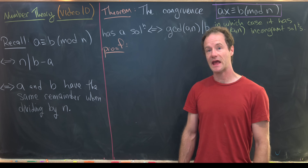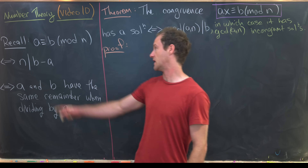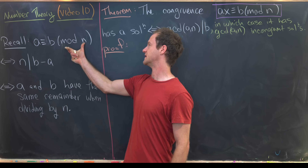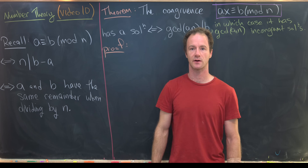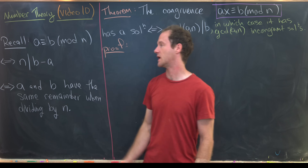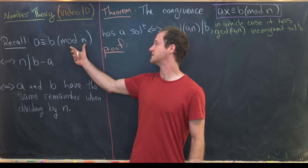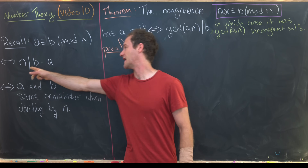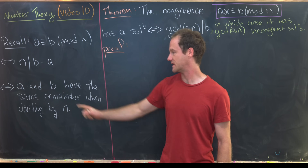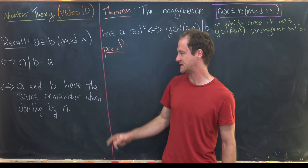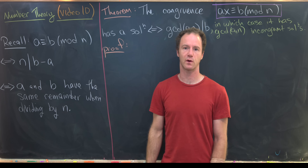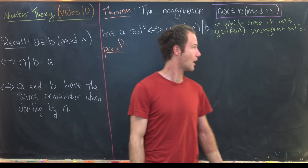We say a and b are congruent mod n, written with a triple equal sign and parentheses with mod n. We read this as 'a is congruent to b mod n.' We define this by n dividing b minus a, which is equivalent to a and b having the same remainder when dividing by n. The second is often quicker to check.